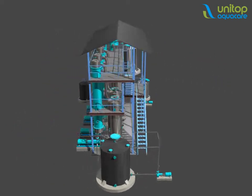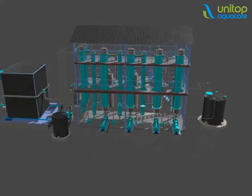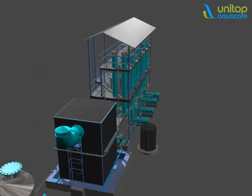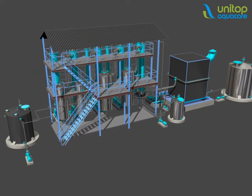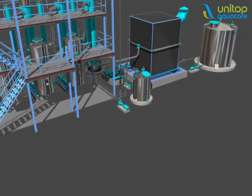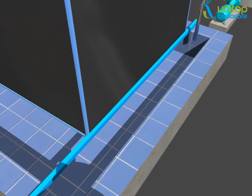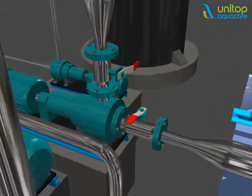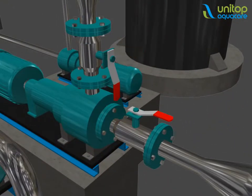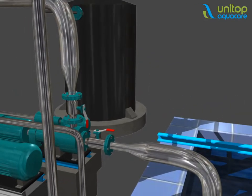Functioning of the multi-effect evaporation plant to achieve zero liquid discharge as per pollution norms. RO reject is fed to the adiabatic tank. From the adiabatic tank, the RO reject is pumped to the surface and vent condensers.